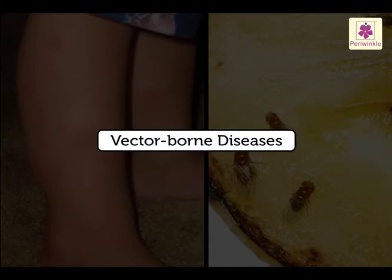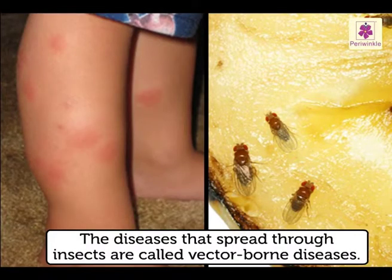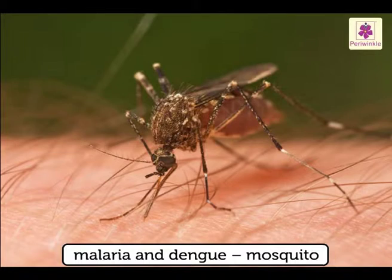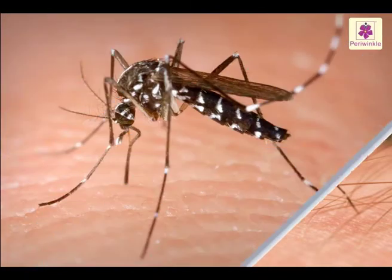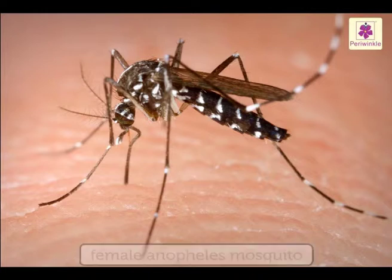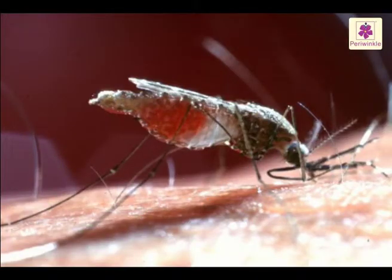Vector-borne Diseases. The diseases that spread through insects are called vector-borne diseases. Malaria and dengue spread through mosquito bites. When a female Anopheles mosquito bites a person suffering from malaria, the germs enter the mosquito's body. The mosquito doesn't get infected, but when she bites a healthy person, that person gets malaria.